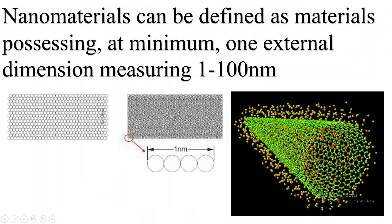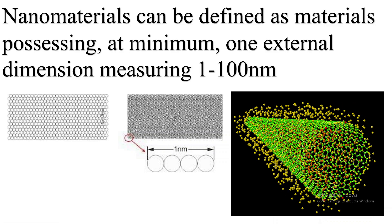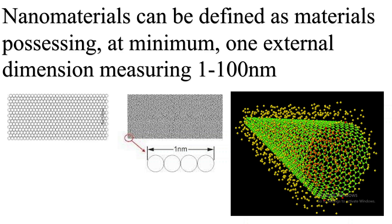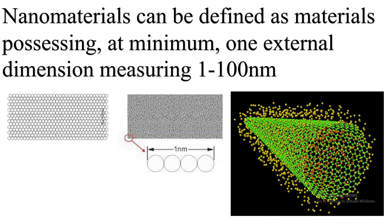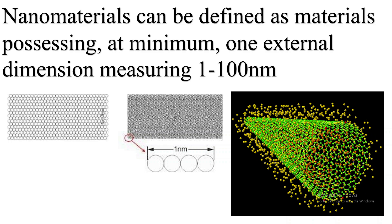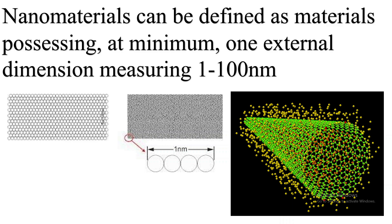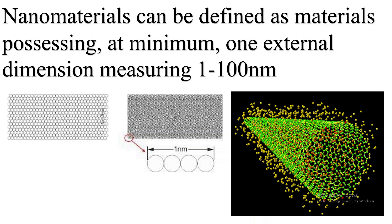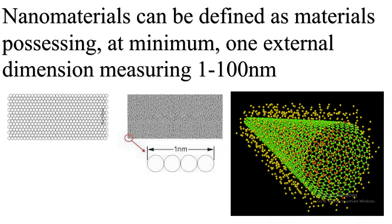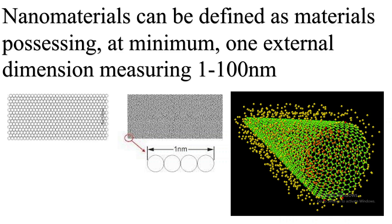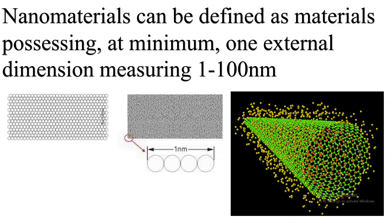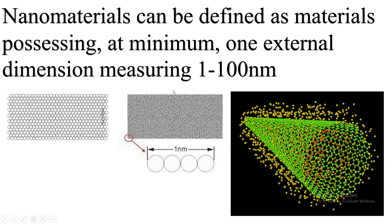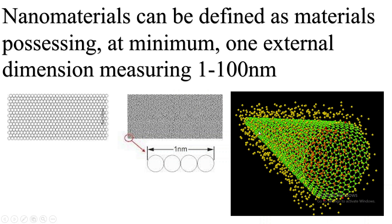Nanomaterials can be defined as materials possessing at minimum one external dimension measuring up to 100 nanometers. This may not be true for all fields — for example, in agriculture, nanomaterials may be defined as ranging from 1 up to 200 nanometers. But in most sciences — chemistry, physics, biology, and some engineering — nanomaterials are considered within the range of 1 up to 100 nanometers, as observed in nanotubes and similar structures.